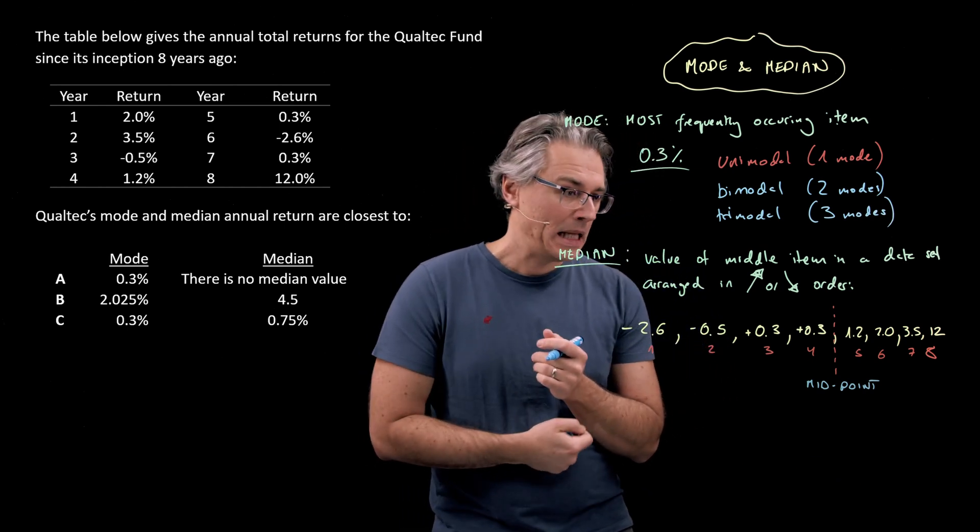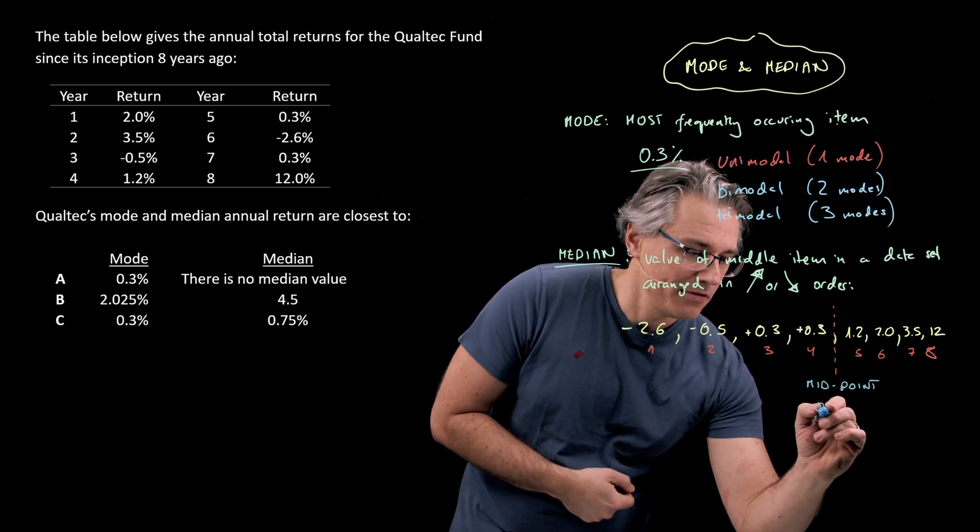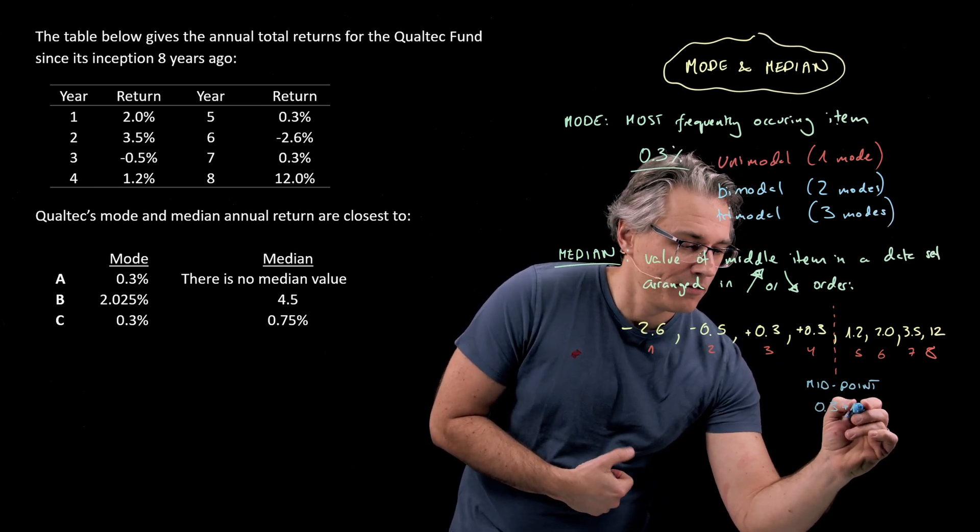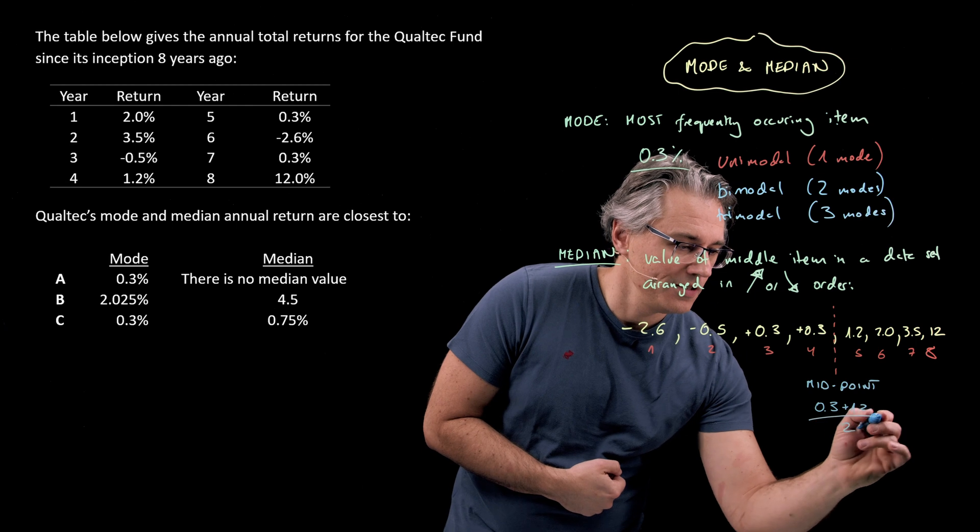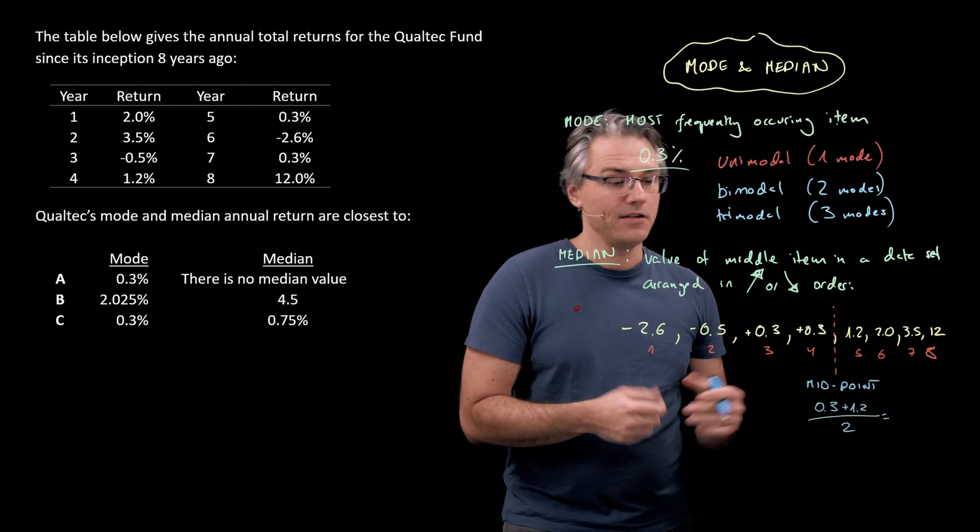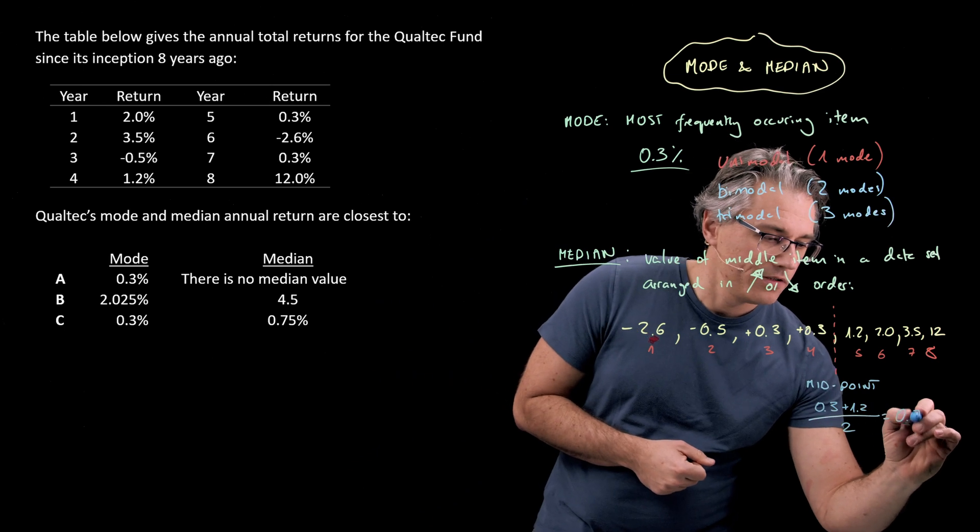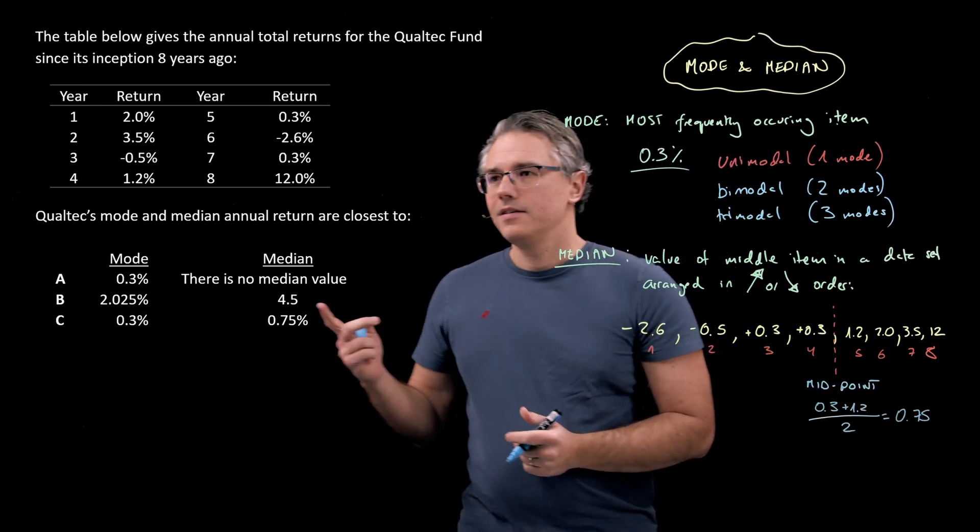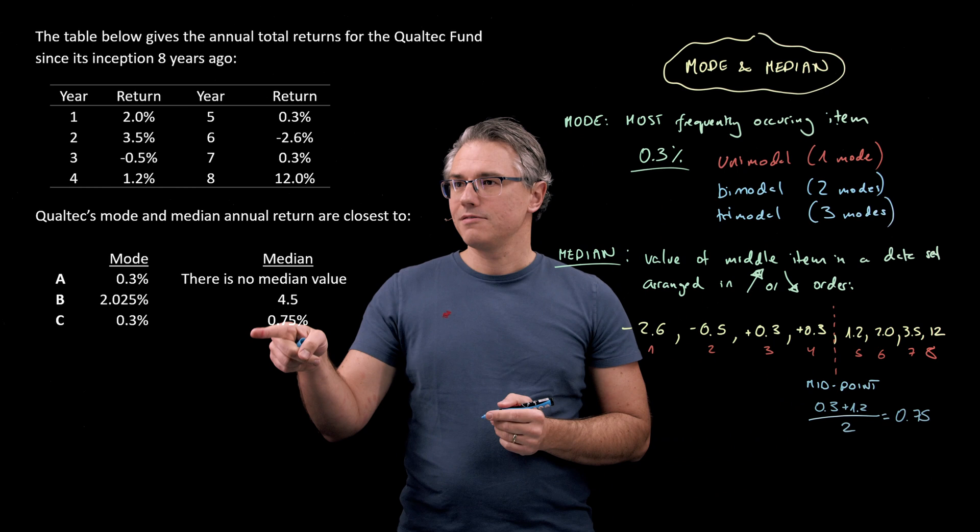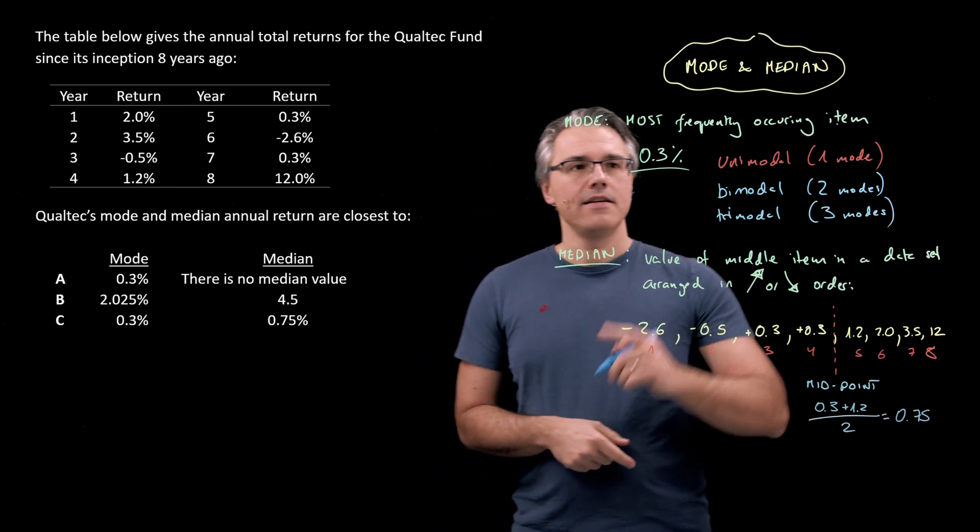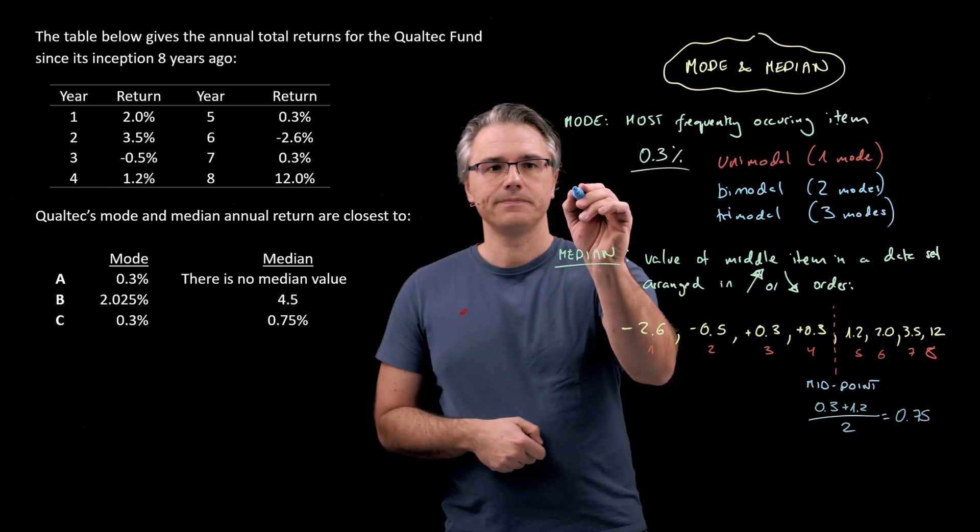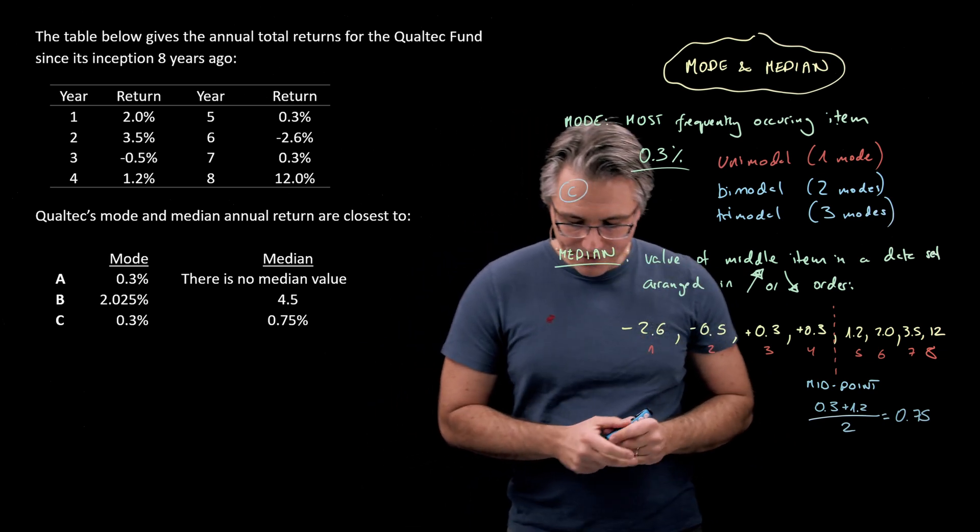So basically, the arithmetic average of the two. So what's the midpoint? 0.3 plus 1.2 divided by 2 is going to be 1.5 divided by 2 and that's 0.75. This is in percent. So as you can see, this will give actually answer C in combination with the mode. Brilliant. However,